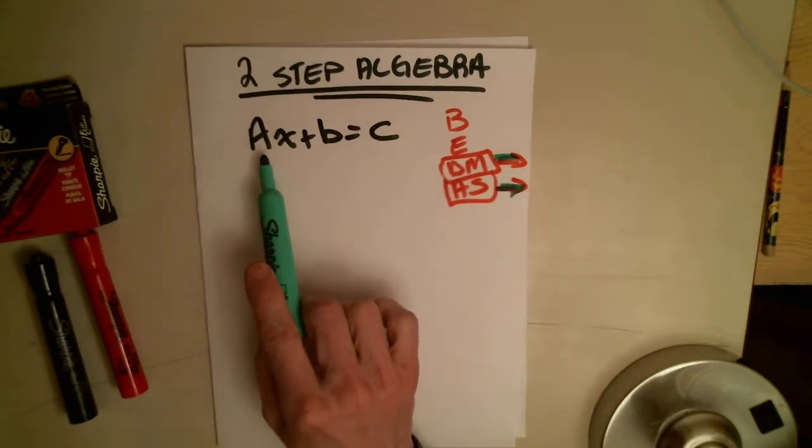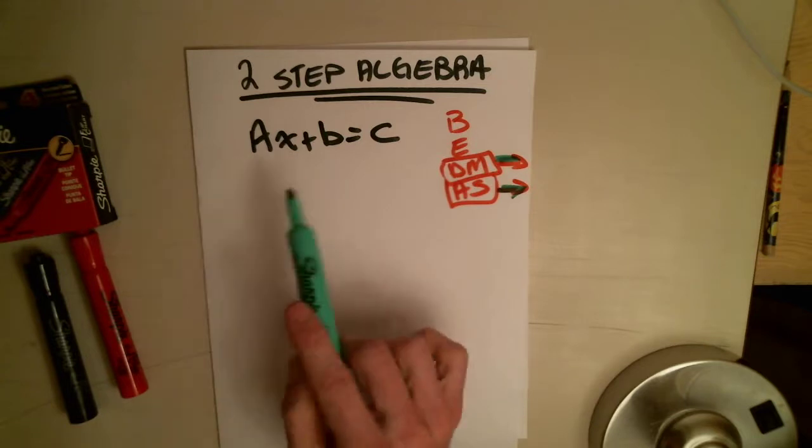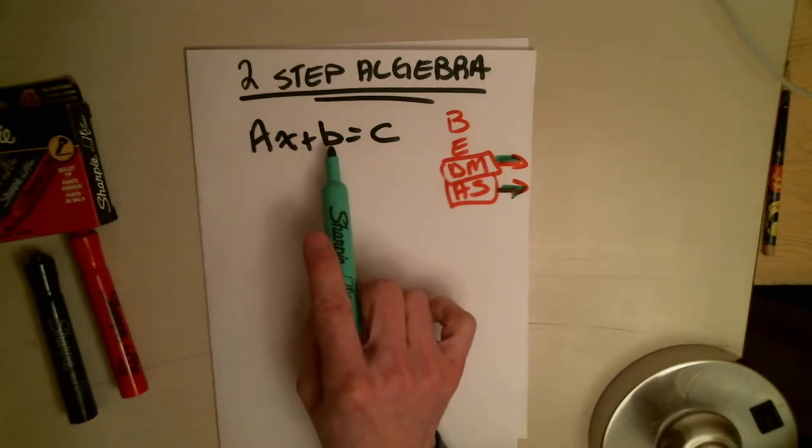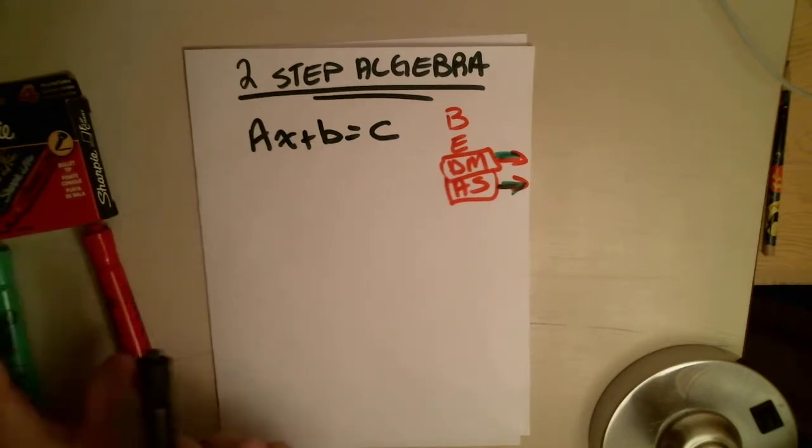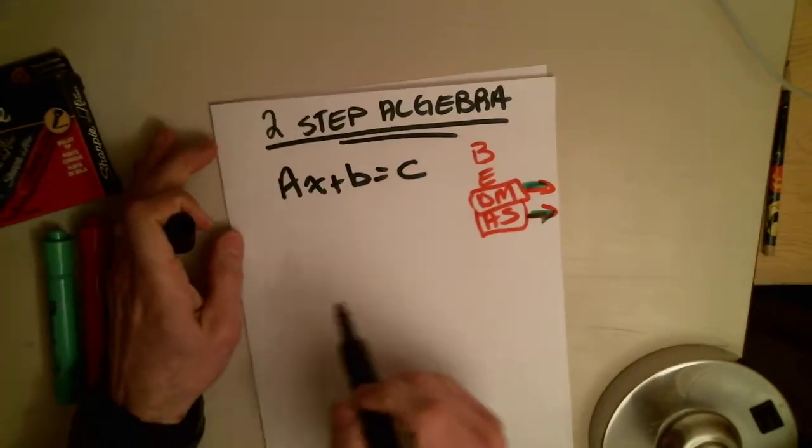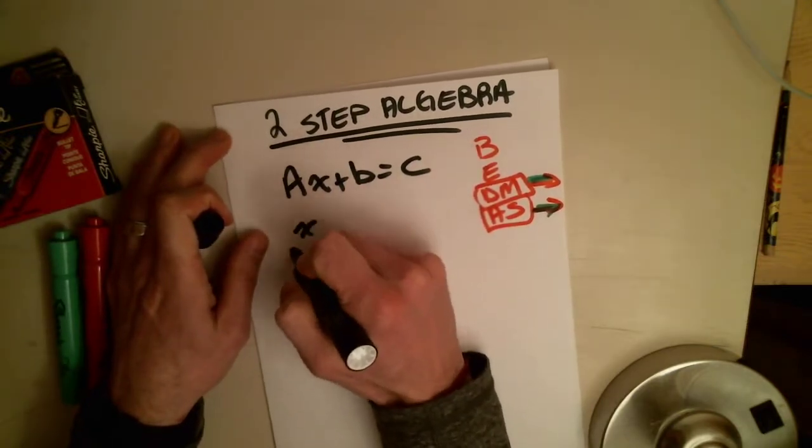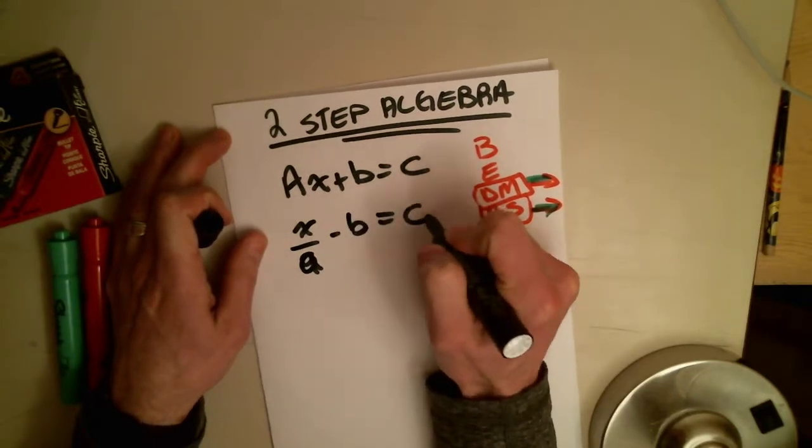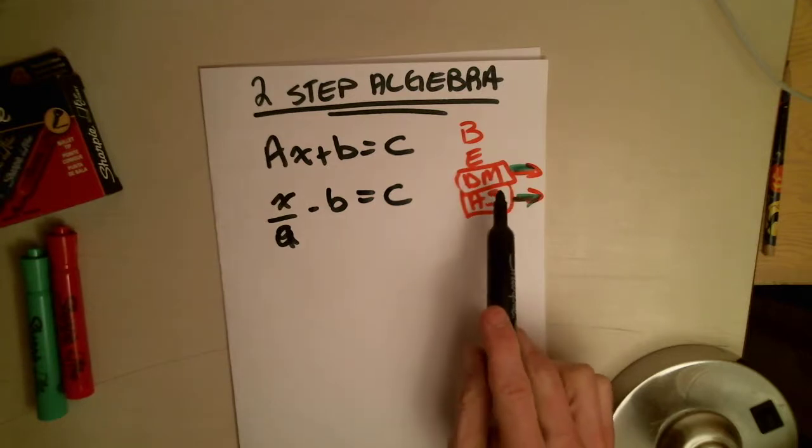So even though this is a times x, this can also be x divided by a. Although this is positive b, this could be negative b. So the thing about a form is that it tells us kind of what we're down to. So this could be x divided by a minus b equals c. That's the same kind of problem.